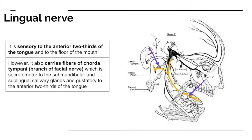Although the lingual nerve was originally carrying only sensory fibers to supply the anterior two-thirds of the tongue, because it receives fibers from the chorda tympani, these fibers bring secretomotor supply to the submandibular and sublingual salivary glands and taste fibers to the anterior two-thirds of the tongue.